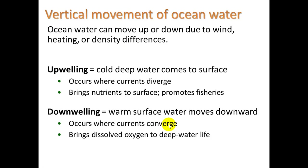Downwelling can bring dissolved oxygen to deep water life, and that's really important. All those creatures down where it's dark in the deep sea are either doing chemoautotrophy with those hydrogen sulfide vents, or they're consumers. And if they're consumers, they need oxygen just like we do. So how does the oxygen get to them? There's nobody doing photosynthesis down there — that oxygen has to come from up above.